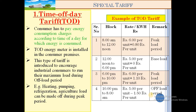During the 10 PM to 8 AM off-load period, if industry runs electrical equipment and machinery and production is on, the per unit charges are only Rupees 5 minus 1.50 Rupees per unit, making the effective rate only 3.50 Rupees per unit. This is one kind of discount given to the consumer who consumes electricity in the night period — from 10 PM to morning 8 AM.